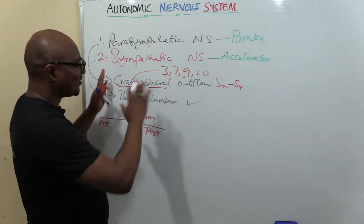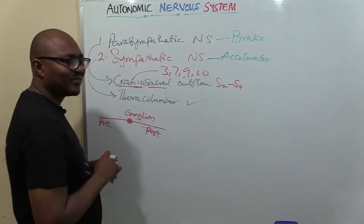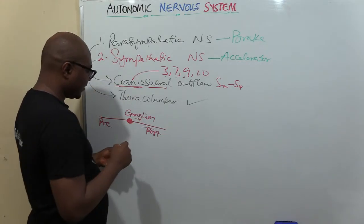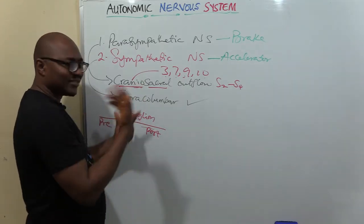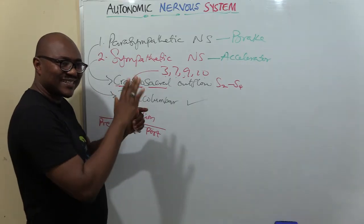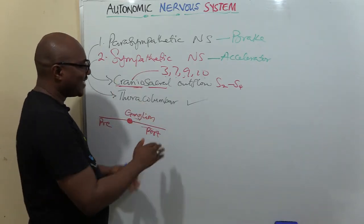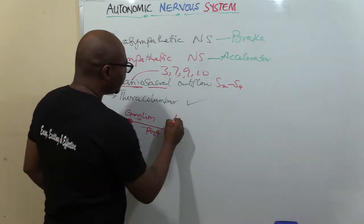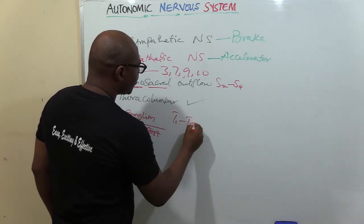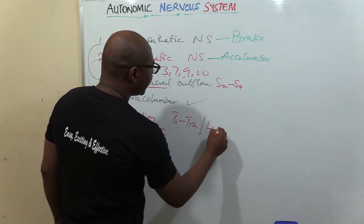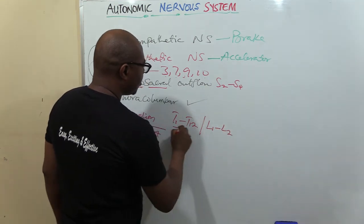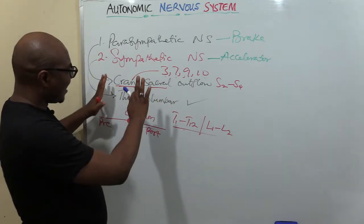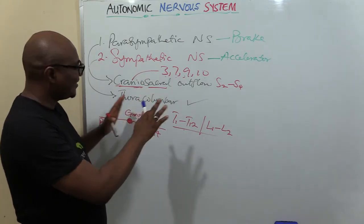Unlike parasympathetic, sympathetic pre and post are almost equal. Thoracolumbar means that they originate, the preganglionic originate from the thoracic segment T1 to T12, and then the lumbar segment L1, L2. Thoracolumbar outflow. That's where they originate from.